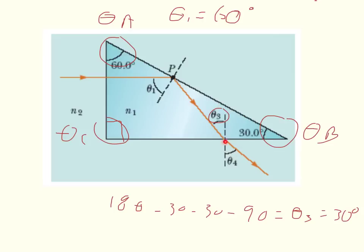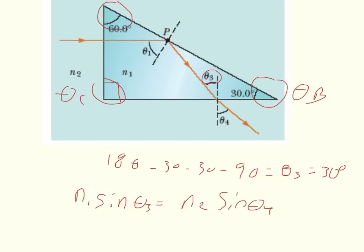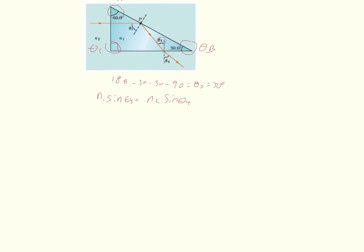Theta 3 is going to allow us to figure out what theta 4 is using Snell's law. And so if we call the block N1, we call this material 1, then using Snell's law we can say that N1 times the sine of theta 3 is equal to N2 times the sine of theta 4. So I'm going to shrink this down so we can keep it on the page. Now we're going to solve for theta 4. We'll do that by doing N1 sine theta 3 divided by N2, and then we'll take the inverse sine. The inverse sine of that will equal theta 4.